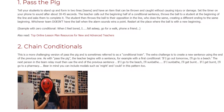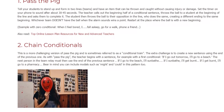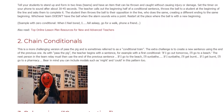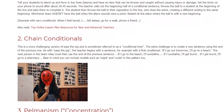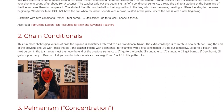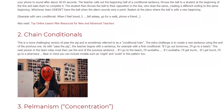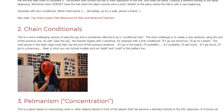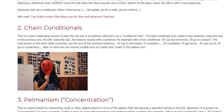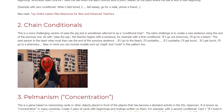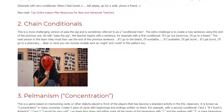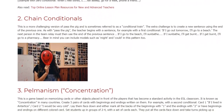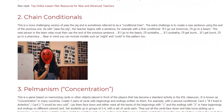For example, with a first conditional: 'If I go out tomorrow, I'll go to the beach.' The next person in the team relay must then use the end of the previous sentence: 'If I go to the beach, I'll sunbathe. If I sunbathe, I'll get burnt. If I get burnt, I'll go to a pharmacy.' Bear in mind you can include modals such as might and could in this pattern too.